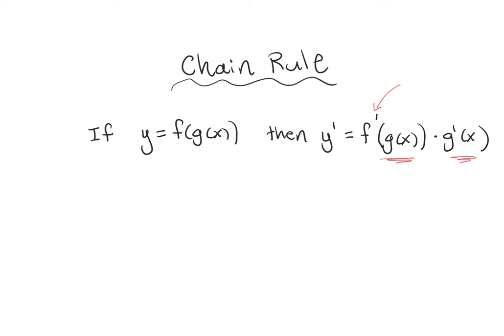For example, what if we had e to the power of sine of 2x squared plus 3? How many different functions do we have? The outer function is e, then we have an inner function of sine, and inside that we have a power function. So we'd be taking derivatives starting with the outside and working our way in.